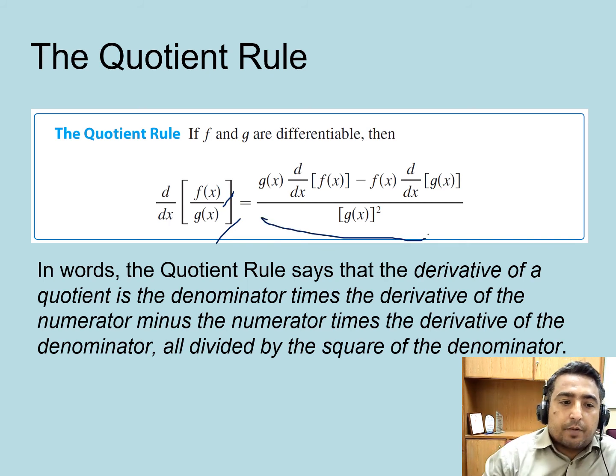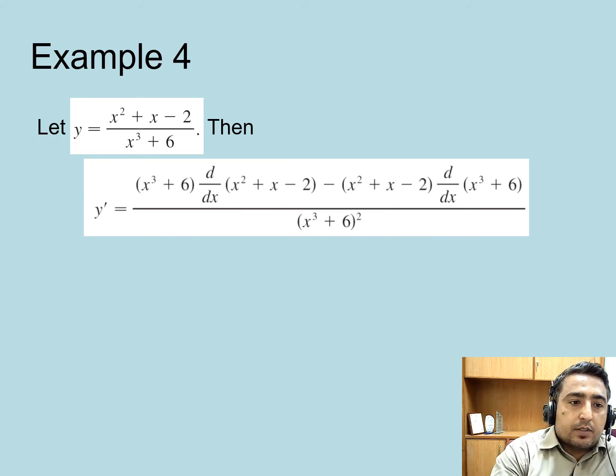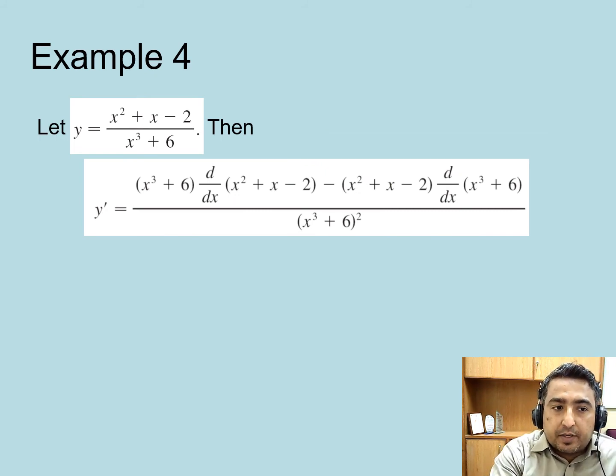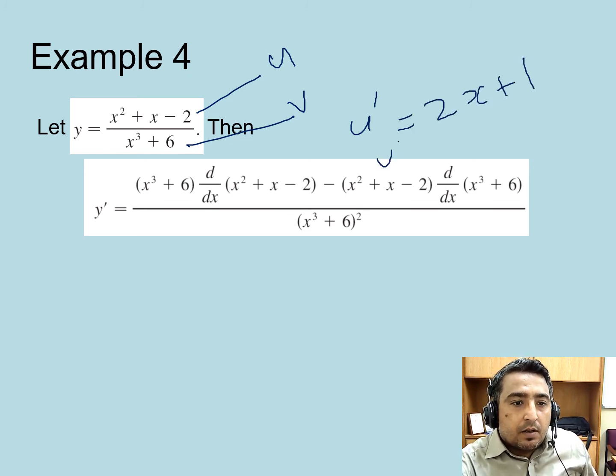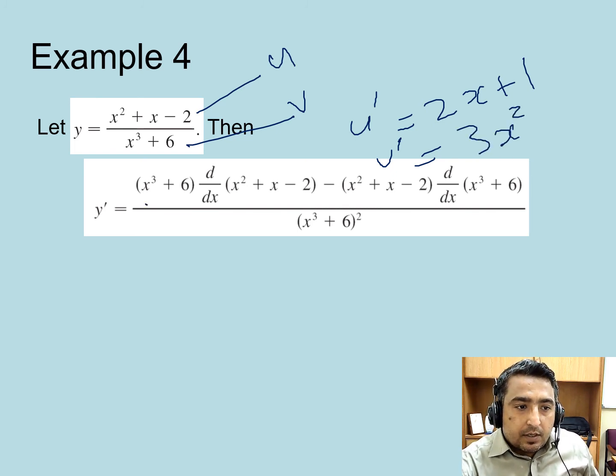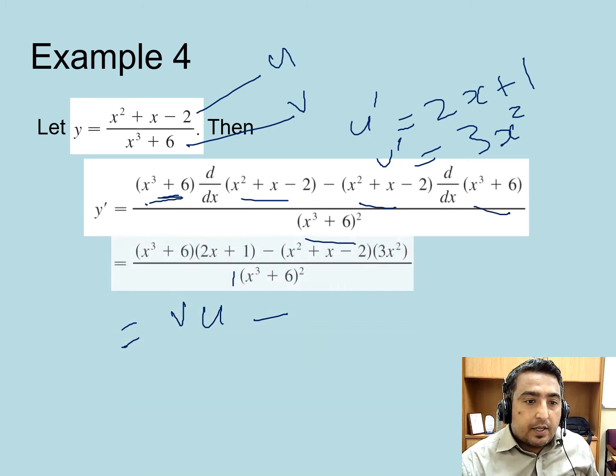Here's an example with a quadratic polynomial in the numerator and cubic polynomial in the denominator. We have u = x² + x - 2, v = x³ + 6, u' = 2x + 1, and v' = 3x². Now applying the formula: (u'v - uv')/v², and then simplification.